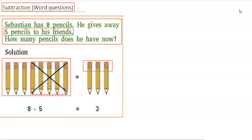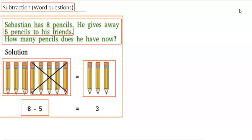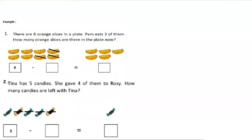He has three pencils — these three pencils that remain. So in short, eight less five gives you three. Let's look at the next example.